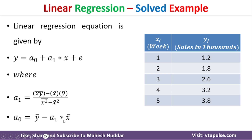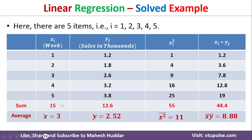First, we calculate the mean of x. The sum of the five x values is 15, so 15 divided by 5 gives us x-bar. Similarly, for y, the sum is 12.6 divided by 5, giving us y-bar. Next, we calculate x²: 1²=1, 2²=4, 3²=9, and so on. The sum of all x² values is 55, and the mean is 55 divided by 5, which equals 11.